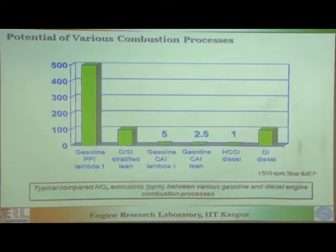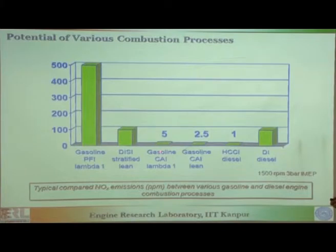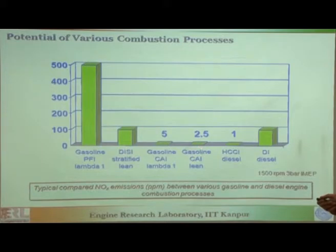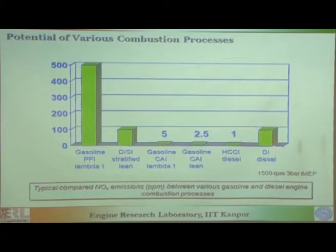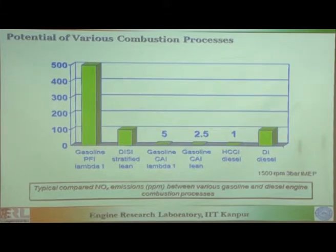Gasoline CAI for lambda equal to 1 — that means stoichiometric mixture — gives a NOx reduction of 99 percent, no after-treatment. When you are doing lean gasoline controlled auto ignition, the NOx reduction is even higher: 99.5 percent. GDI stratified lean reduces NOx by 80 percent, but CAI reduces by 99 percent plus. A diesel engine emits about 100 ppm, and if you are using diesel HCCI, this also reduces by 99 percent. So you can clearly see that HCCI, CAI, or LTC actually reduces NOx emissions by easily 95, 98, 99 percent plus.